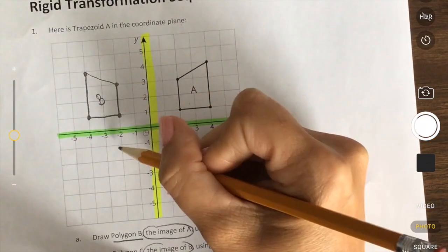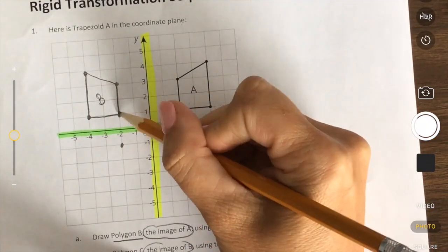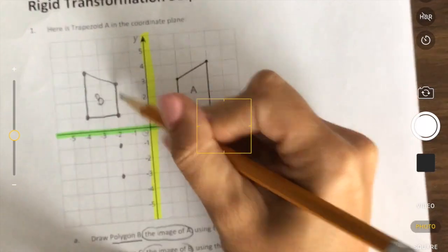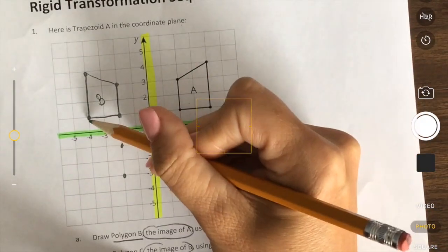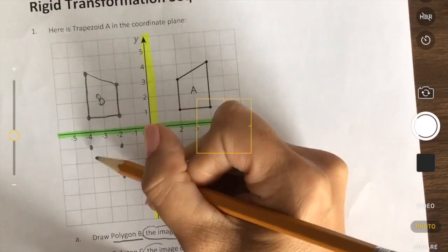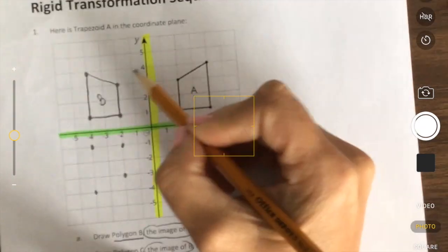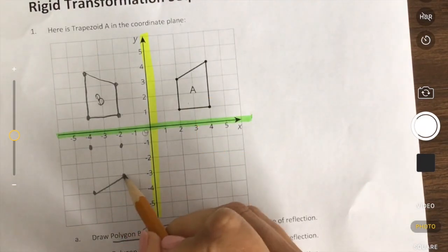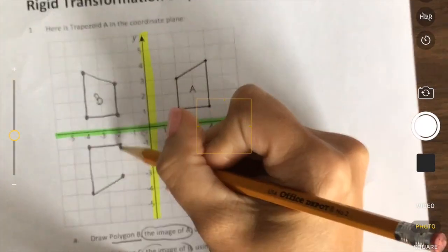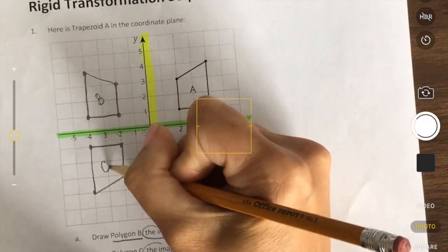So this is one away, so one away. This is two long, so we can count one, two, or we can count this is three away and this is three away. Same thing here, one away, one away. And this is three long, so one, two, three, which is also four away, and then connect. So this is now polygon C.